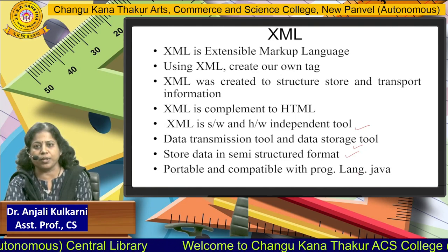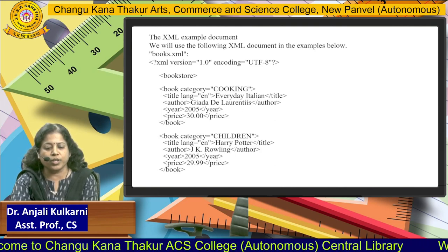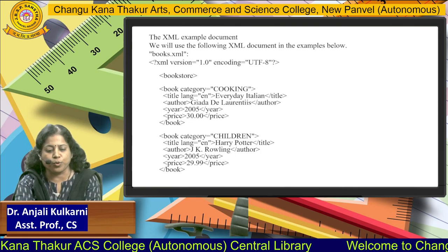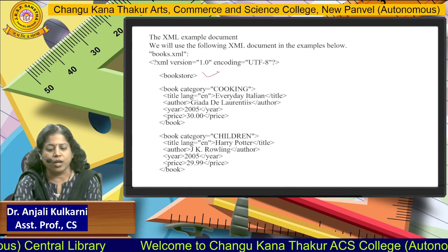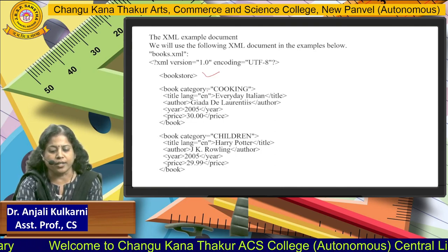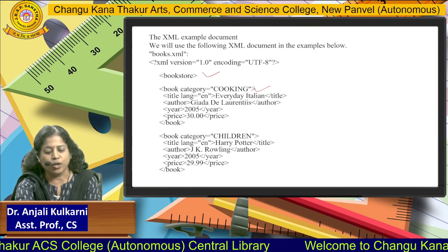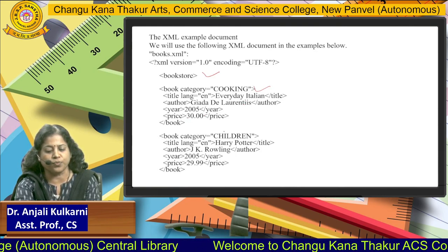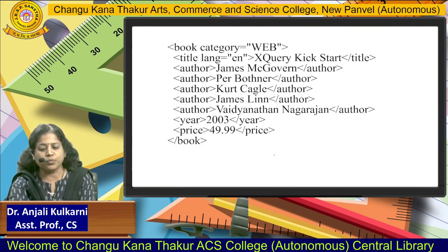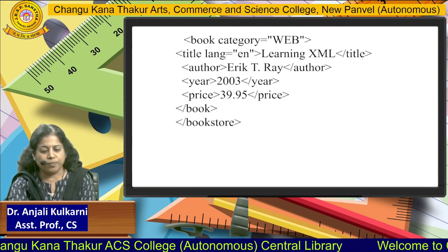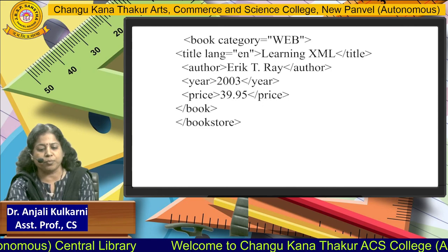XML is also portable and compatible with the programming language Java. Here is an example XML document, books.xml. We define the XML version as 1.0 and encoding as UTF-8 — this is the standard format. We have different tags: the main tag is bookstore. Under the bookstore tag, we create our own tag 'book' with a category attribute. For example, category 'cooking' has title 'Everyday Italian', author 'Giada', year 2005, and price 30. Next is a 'children' category, and another category is 'web'. So this is the bookstore XML document where under bookstore there are different book categories having title, author, year, and price.